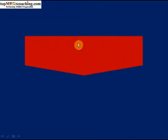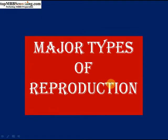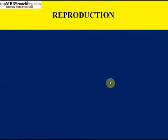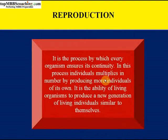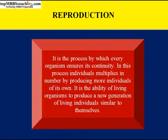Hi students, today we are going to study about major types of reproduction. First of all, what is reproduction? It is a process by which every organism ensures its continuity. In this process, individuals multiply in number by producing more individuals of its own. So it is the ability of living organisms to produce a new generation of living individuals similar to themselves.